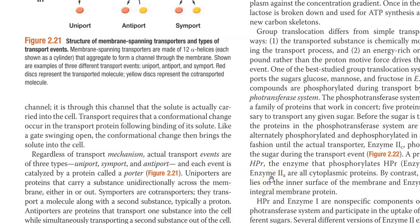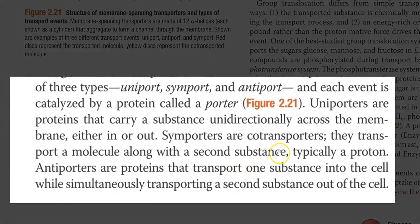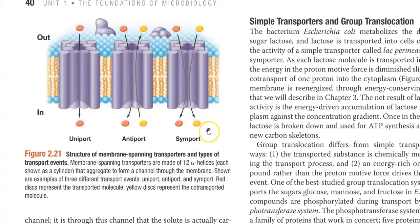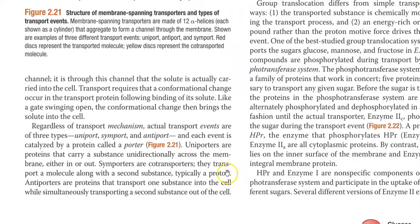For example, in uniporters, proteins are carrying a substance unidirectionally across the membrane, either in or out. Symporters are also referred to as co-transporters that are involved in the transport of a molecule along with a second substrate. That is, two molecules are taken together in the symporter system. In this system, typically the second molecule will be a proton.